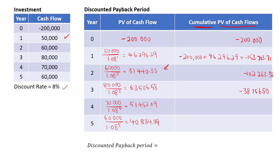For year four, we add $51,452.09, giving a positive cumulative figure of $12,695.29. And finally, adding $40,834.99 for year five — although it's not needed — gives positive $53,530.28.